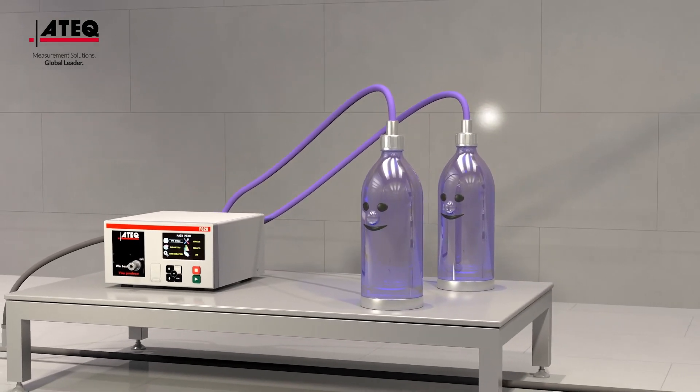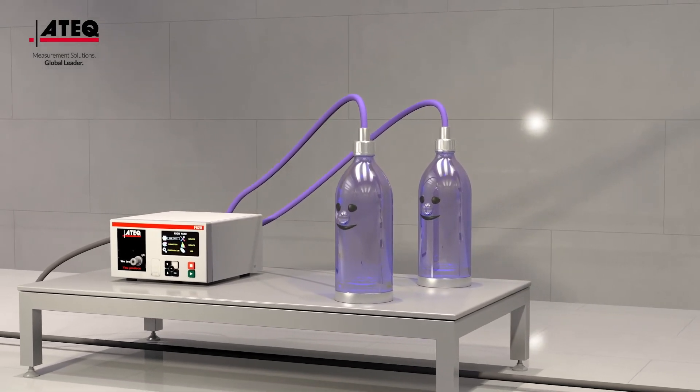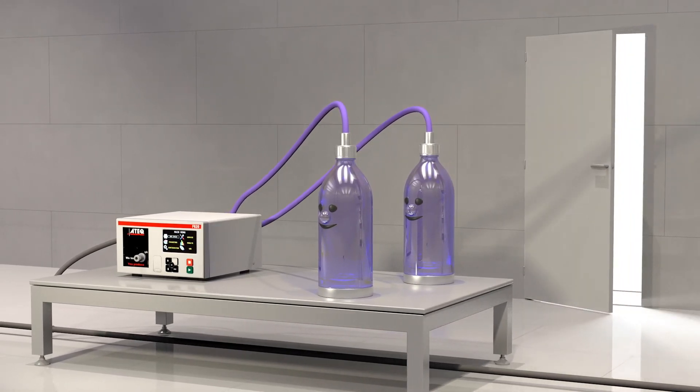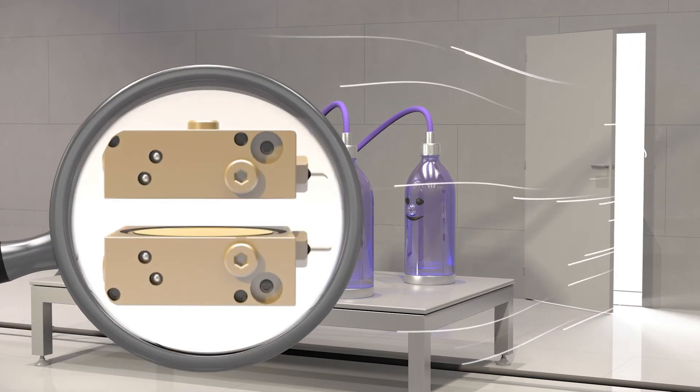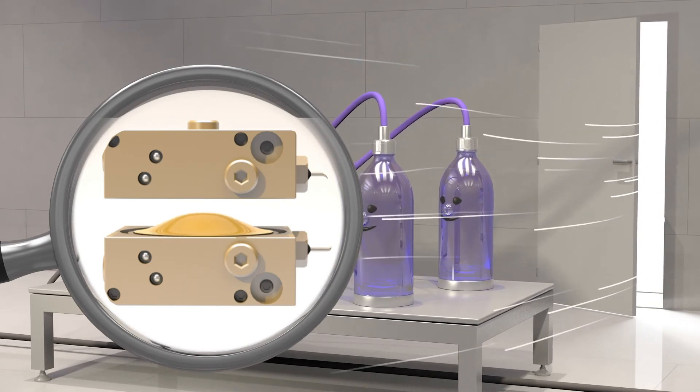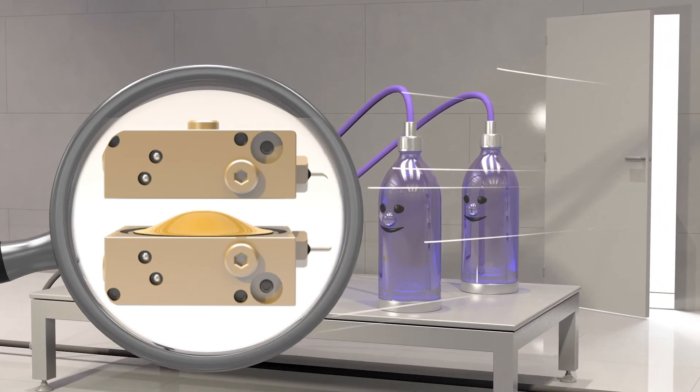But the differential pressure drop has another benefit. When ambient disturbances, such as air currents, occur, the differential pressure test is not affected. The micropressure variations won't occur on the two pieces at the same time and in the same proportions. Only a leak will create a difference and will be detected.